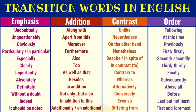For emphasis, we have: undoubtedly, unquestionably, obviously, particularly, in particular, especially, clearly, importantly, absolutely, definitely, without a doubt, indeed, and it should be noted. If you want transitional devices that add thoughts, you can use: along with, apart from this, moreover, furthermore, also, as well as that, besides, in addition, not only, but also, in addition to that, and additionally.